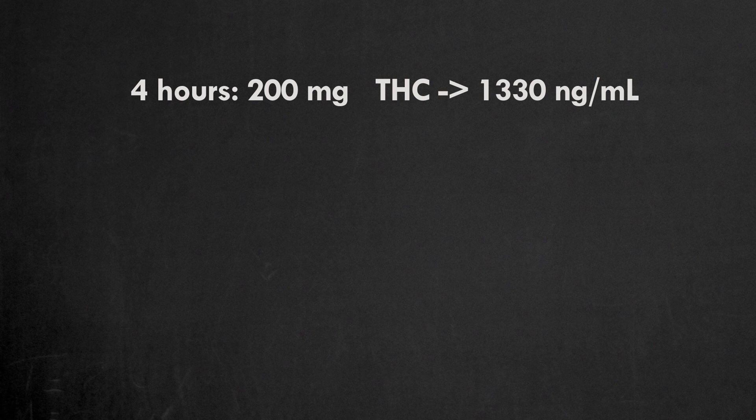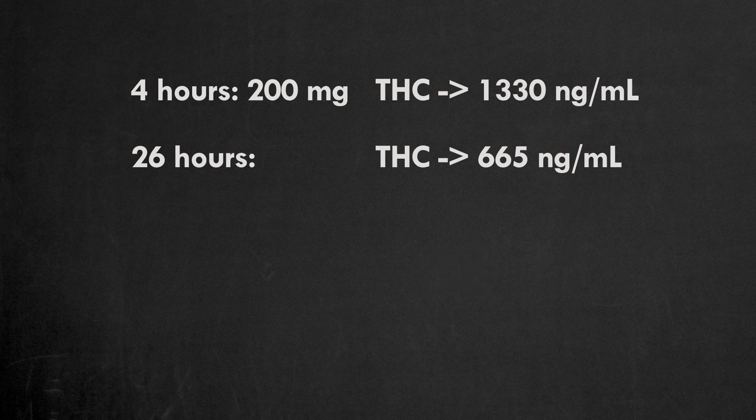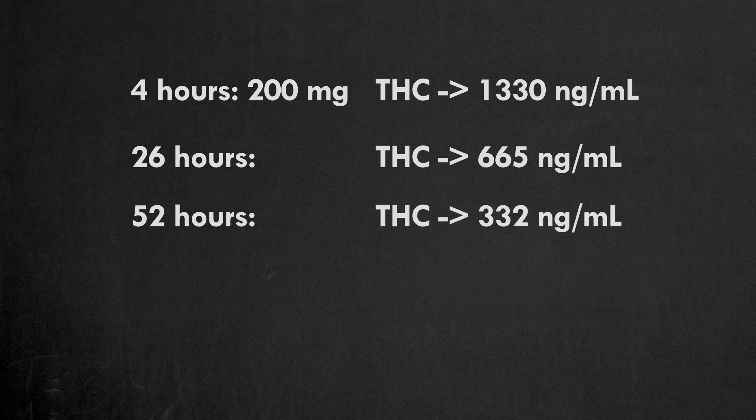The half-life of THC for the infrequent user is 26 hours. So, after 26 hours, the concentration would drop to 665 ng per ml. After 52 hours, it would be 332 ng per ml.